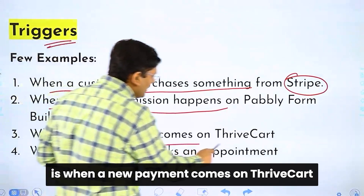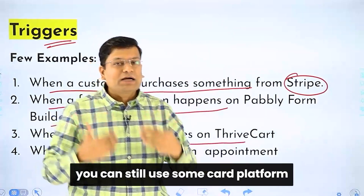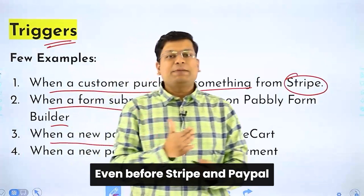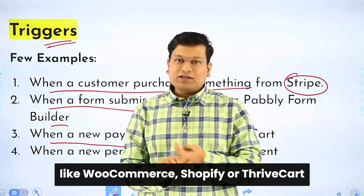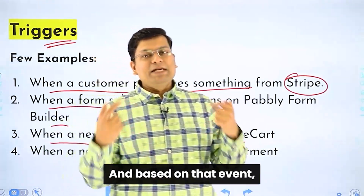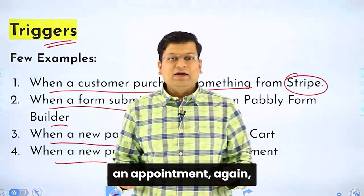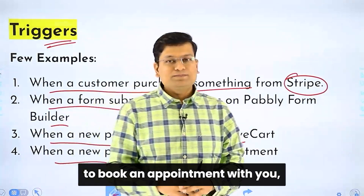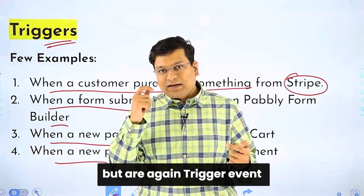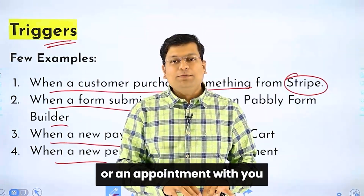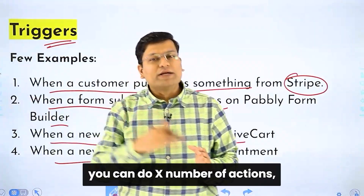The next trigger example is when a new payment comes in on ThriveCart. If you are not selling through Stripe or PayPal, you can still use a cart platform like WooCommerce, Shopify, or ThriveCart. You can get a purchase event, and based on that event you can do lots of things. When a new person books an appointment — if you use booking software like Calendly — that is again a trigger event. Based on that appointment, you can register a call, book something in a different software, or perform any number of actions.